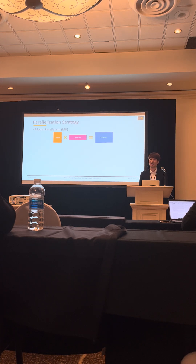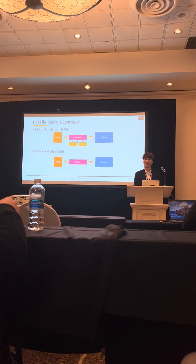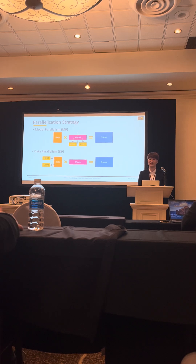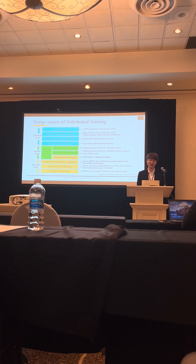Now we know we should split the data and model, and how to do it is called a parallelization strategy. With model parallelism, we split the model to reduce the memory footprint per NPU and distribute across different NPUs. With data parallelism, we split the data across pieces and distribute them to speed up training. Because the model and data are split, NPUs must communicate with each other as well. This results in a complex design space spanning from the actual DNN models and how they are parallelized, down to the physical network layer where buffering, flow control, and arbitration matter.